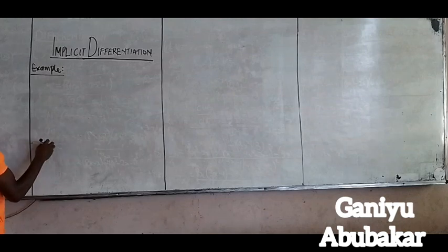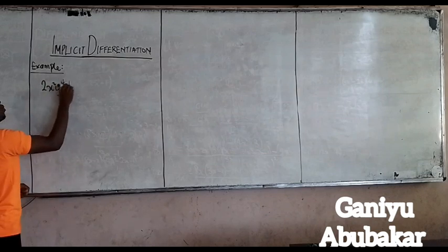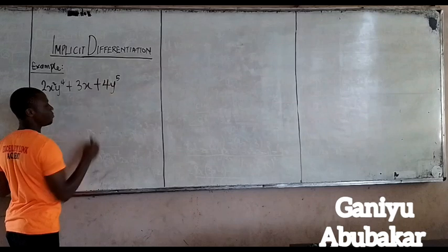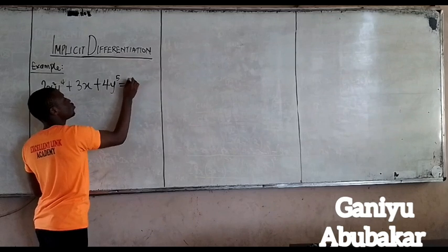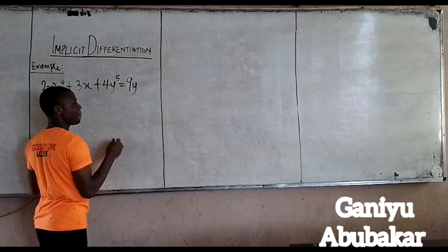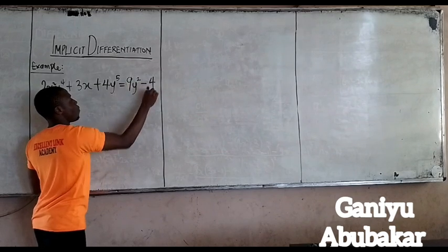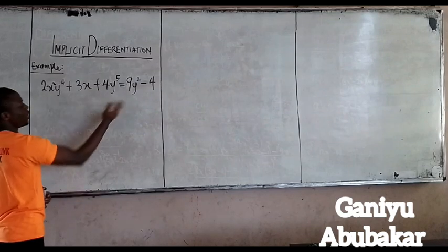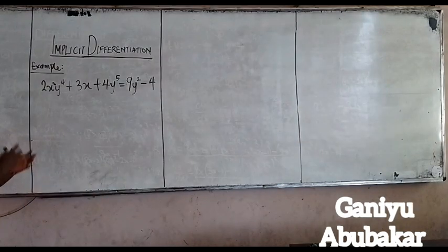Example. If I have 2X squared Y to power 4 plus 3X plus 4Y to power 5 is equal to 9Y to power 3 minus 4. Looking at this question, X and Y are placed together. So how do you solve this using the concept of implicit differentiation?